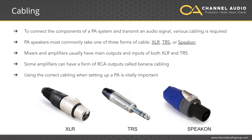Cabling. To connect the components of a PA system and transmit audio signal, various cabling is required. PA speakers most commonly take one of three forms of cable: XLR, TRS, or SpeakOn. Mixers and amplifiers usually have main outputs and inputs of both XLR and TRS. Some amplifiers can have a form of RCA outputs called banana cabling. Using the correct cabling when setting up a PA is vitally important. If wrong cables and or connectors are used, equipment may not operate correctly. In the worst case scenario, using the wrong cables or connectors can be dangerous.